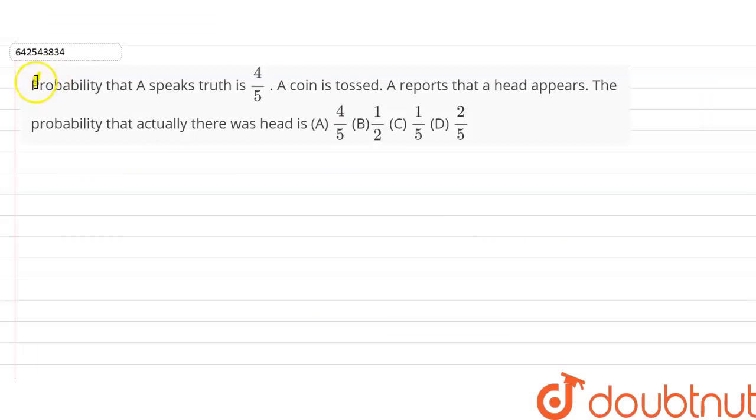The question says that the probability that a person speaks truth is 4 upon 5 and a coin is tossed. And the person A reports that a head appears. So we have to find the probability that actually there was a head.